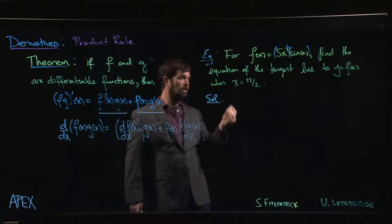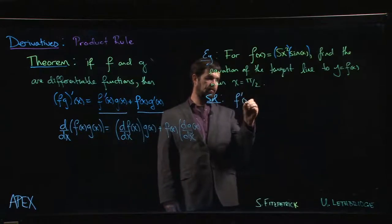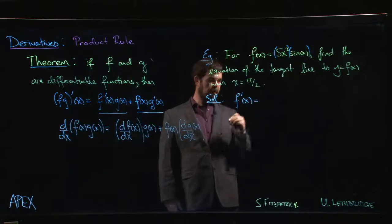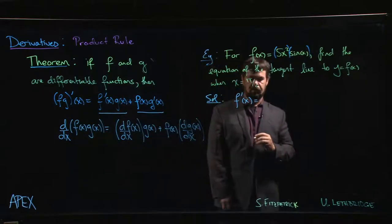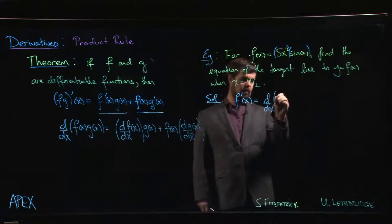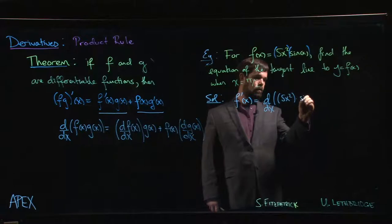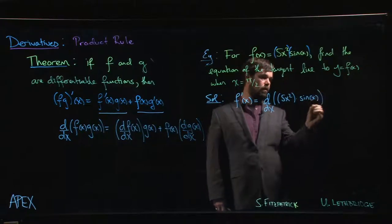So here's our solution. First thing we've got to do, find f prime of x. So f prime of x is the derivative of 5x squared times sine x.